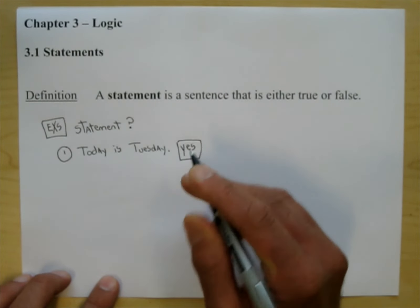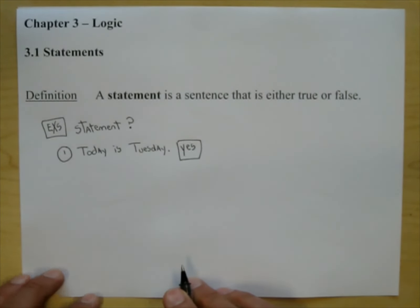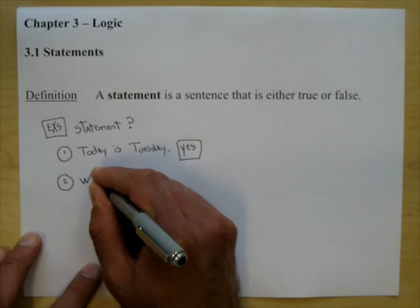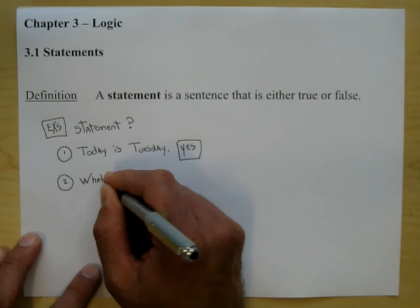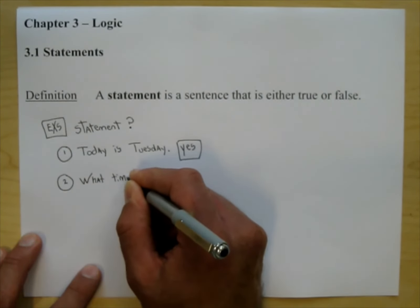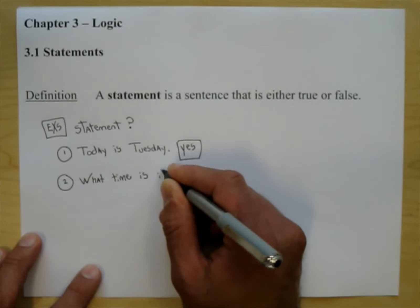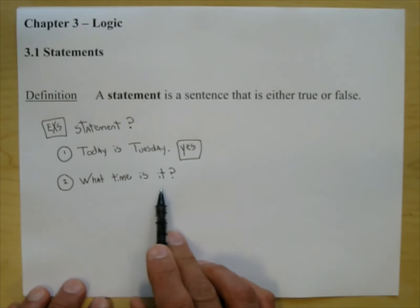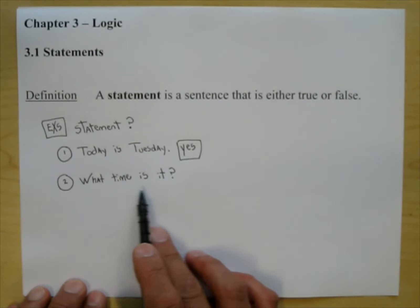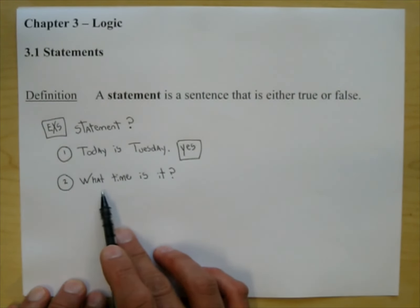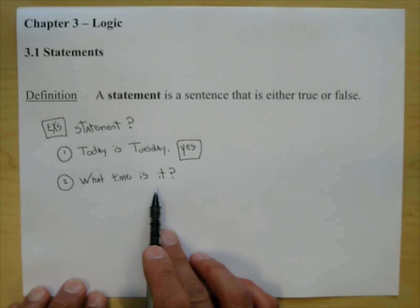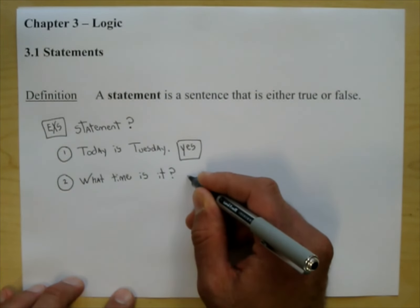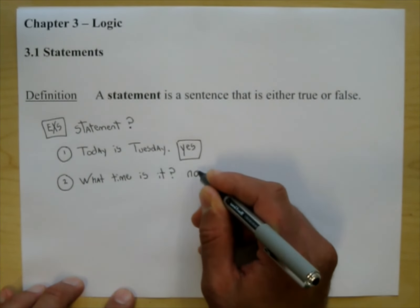These are the kinds of problems you'll be encountering in your homework. Problem number two: 'What time is it?' Can we put a truth value on this? No, we cannot put a truth value on a question. So for this one, is this a statement? No.